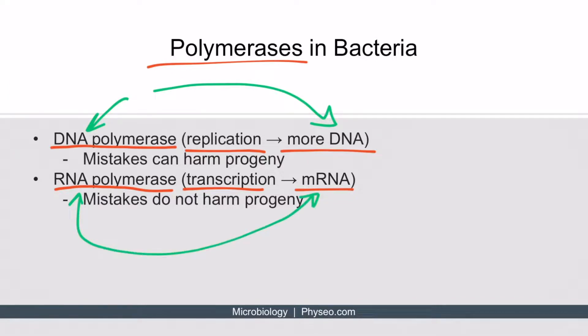Why is it important to remember their respective roles? DNA polymerases must not make mistakes in the DNA it creates, because those mistakes would be passed on to the progeny and possibly harm them — the DNA polymerase is responsible for replication, so you don't want it making mistakes. Whereas RNA polymerases might make mistakes in their creation of mRNA, but those mistakes won't affect all the progeny — at most, they'll just make that particular bacterium less virulent.